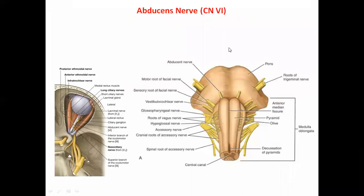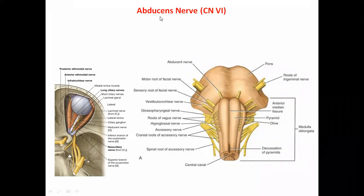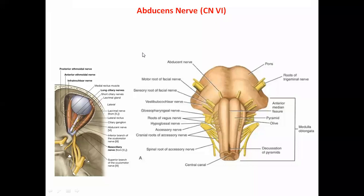The next nerve is the sixth cranial nerve — the abducens nerve. It got this name because it abducts the eyeball. The abducens nerve supplies the lateral rectus muscle, and when the lateral rectus acts, it causes abduction of the eyeball.